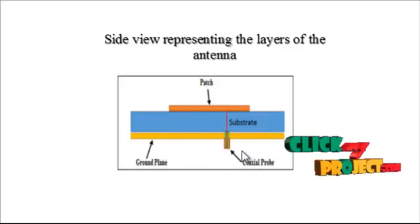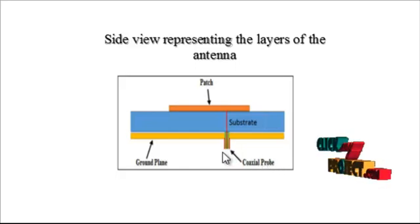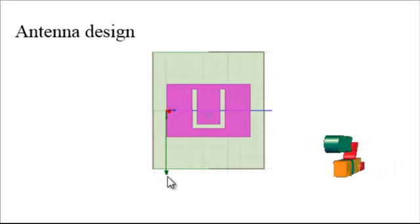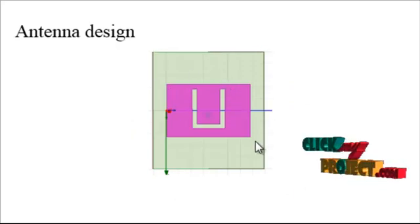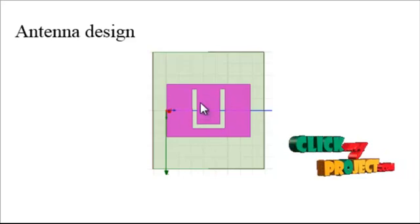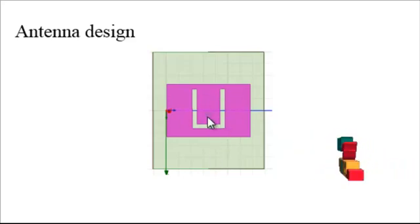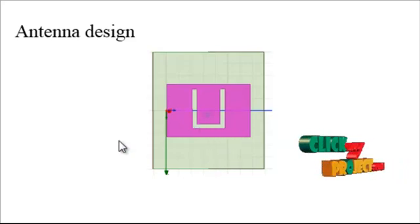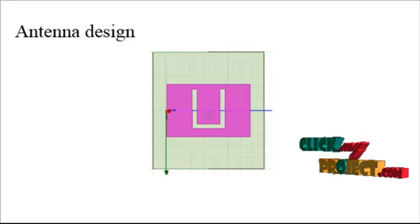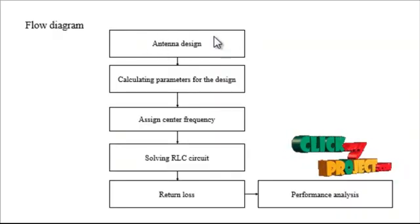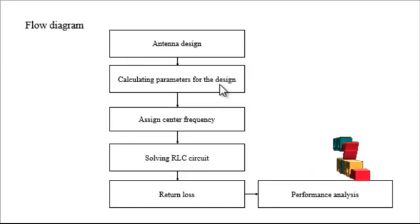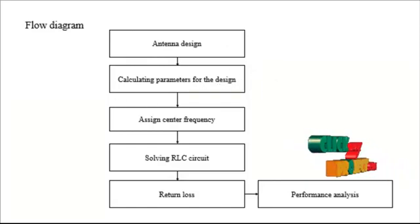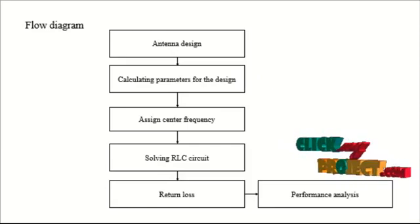The coaxial probe feed calculates the value related to the ground plane and analyzes the wave port of the design. In this antenna design, the rectangular patch uses a single U-slot. At the bottom of the substrate, we use the coaxial probe feed, which is very useful and commonly used for this type of antenna. The critical calculating parameters of the design are: substrate electrical thickness, slot width, probe radius, and field location variance.